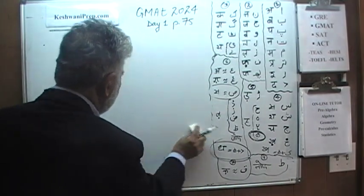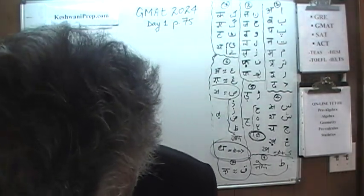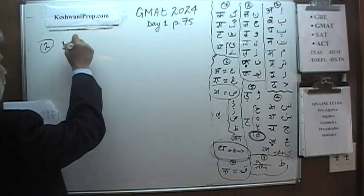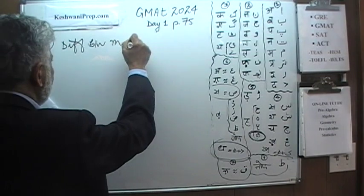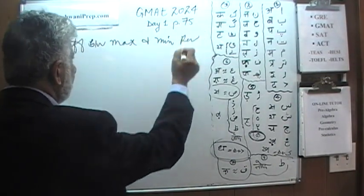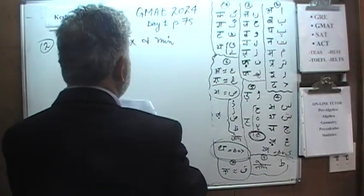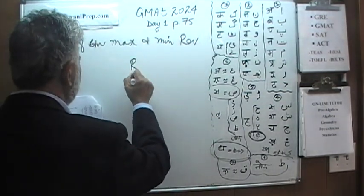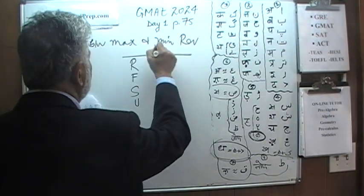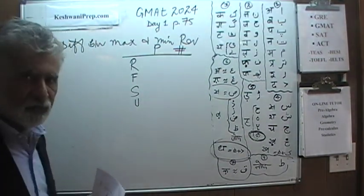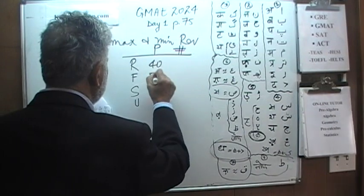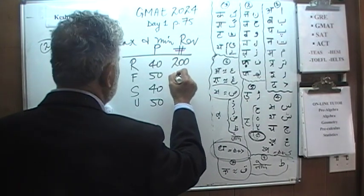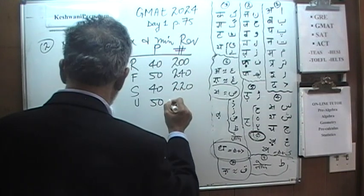Let's look at problem two. We are asked to find the difference between the maximum and minimum revenue. We have four days: Thursday, Friday, Saturday, and Sunday. The prices charged were $40, $50, $40, and $50 thousand. The number of tickets sold were 200, 240, 220, and 300. Pause the video and do it yourself before we work through it together.